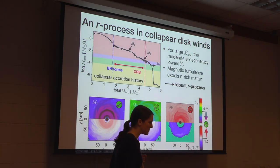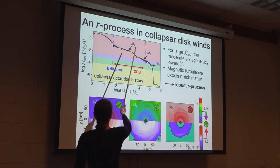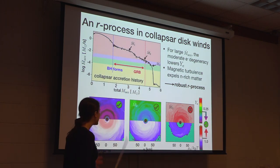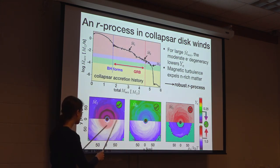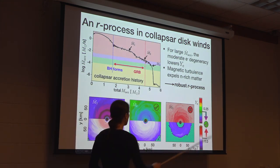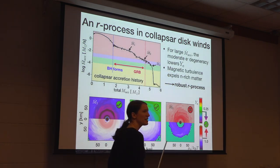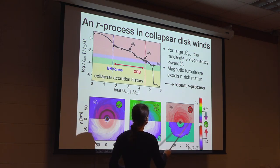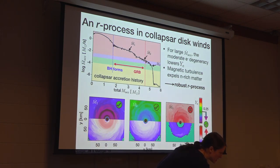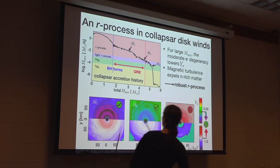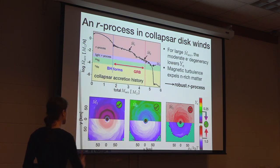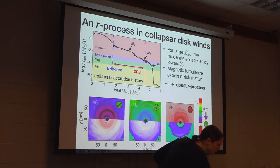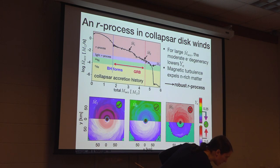Returning to the full set of simulations, we found that as long as accretion rates were high enough—so models M1 and M2—we had the high densities needed to get the mild electron degeneracy required to produce the low Y-E. In contrast, our third snapshot shows that lower accretion rates meant lower densities; we didn't get the required conditions, and instead you get either a lighter R-process event or a different kind of nucleosynthesis altogether, burning nickel-56, helium, or alpha particles.